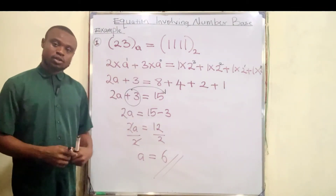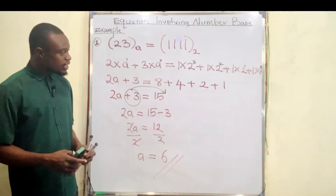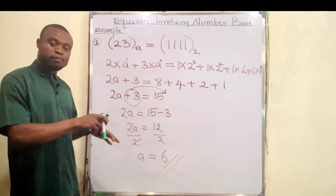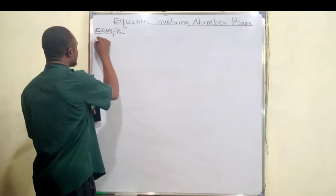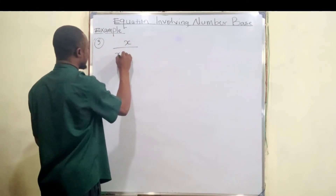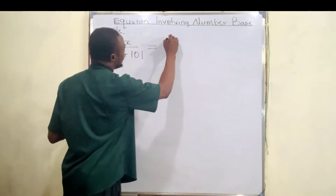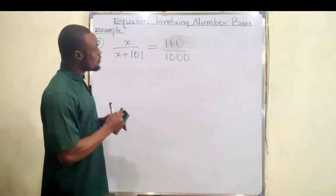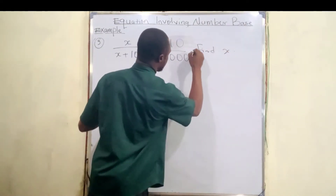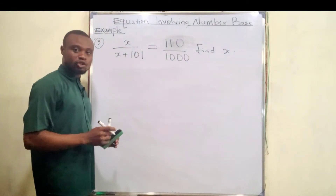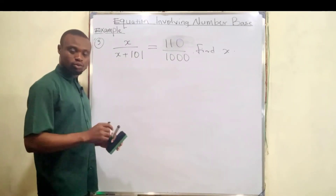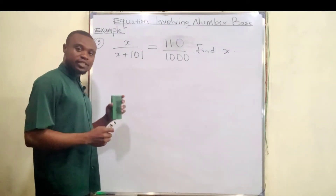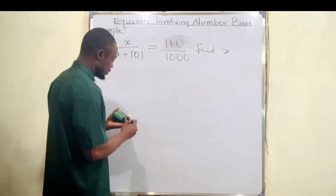Now finally the third question. You can see it involves conversion — you convert to base 10 and from there find the exact value of what you're looking for. Question number three is: x divided by (x + 101 base 2) equals 110 base 2 divided by 1000 base 2. We have to find the value of x. All these numbers are in base 2, so we'll convert them to base 10, then cross-multiply.